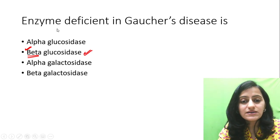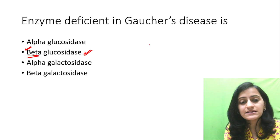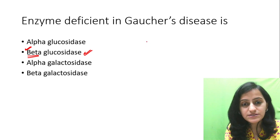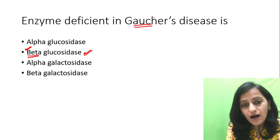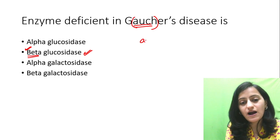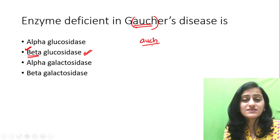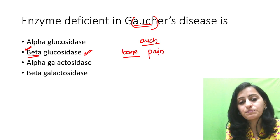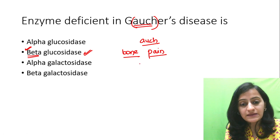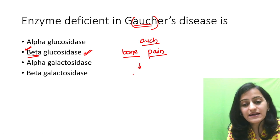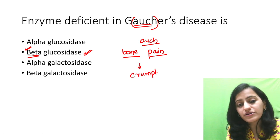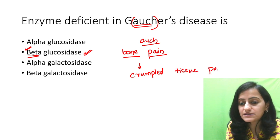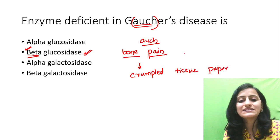What are the other features of Gaucher's disease? It is basically a sphingolipidosis. In the spelling of Gaucher's, we have 'ouch' — so the patient does a lot of 'ouch,' meaning the patient has a lot of pain, and that is bone pain. We also see the appearance that is crumpled or wrinkled tissue paper appearance.